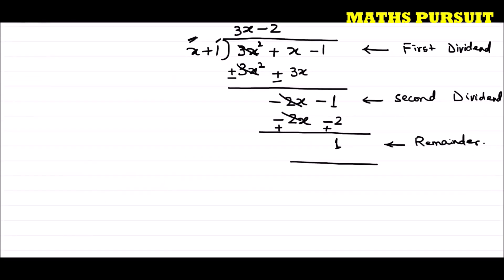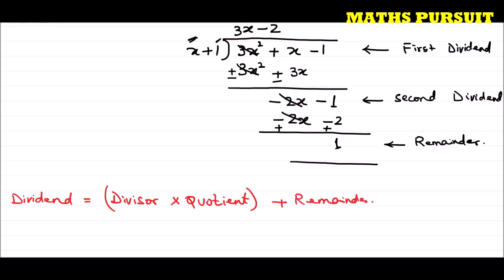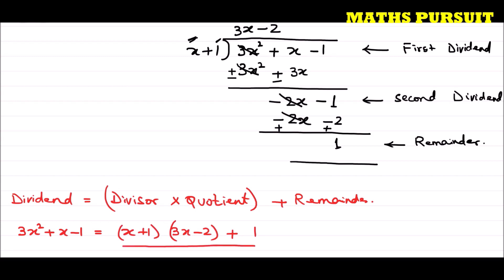Now we can write our conclusion using the formula: dividend equals divisor into quotient plus remainder. So 3x² plus x minus 1 equals (x plus 1) into (3x minus 2) plus 1. If we solve this, we will definitely get the dividend. This is our answer.